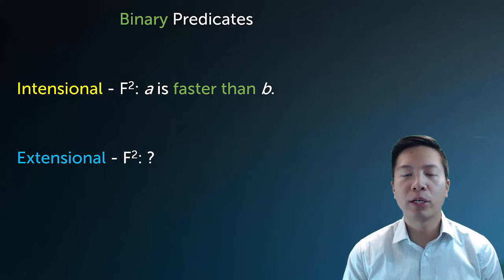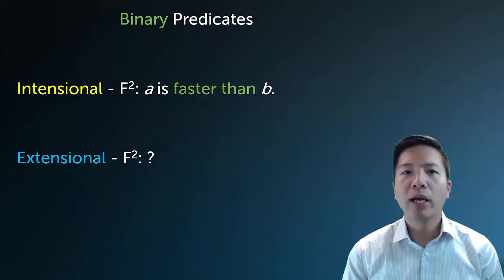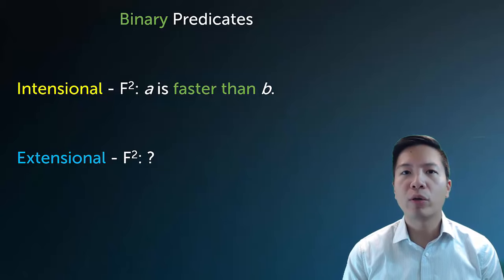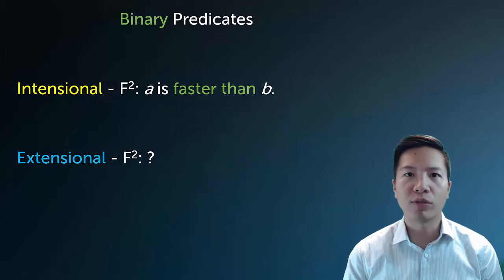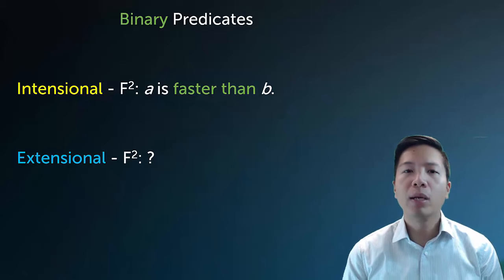Recall that extensional interpretations use extensional definitions of predicates, which use set theoretic notation. We knew that we could just list out all the elements of predicates in the universe of discourse in a set, and that was an extensional interpretation waiting to happen.